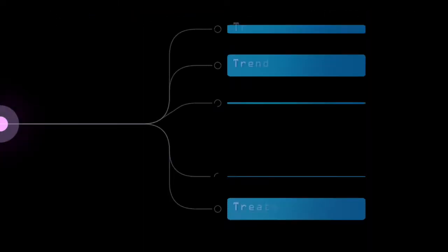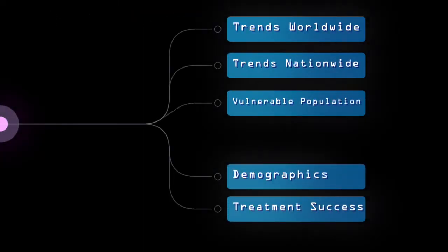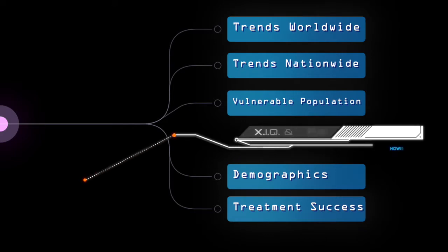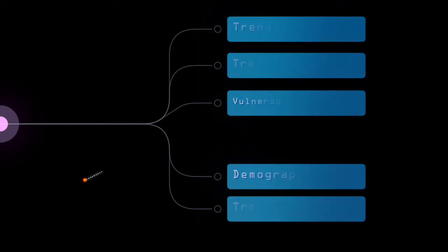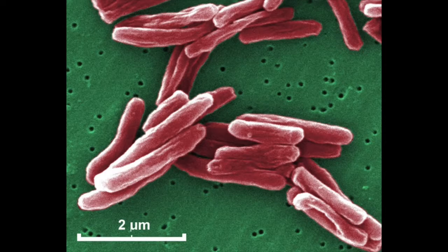What you just saw was a picture of a tuberculosis nodule in the right lung. For this program, I'll be talking about trends, vulnerable populations, demographics, as well as the treatment successes that we've encountered so far.